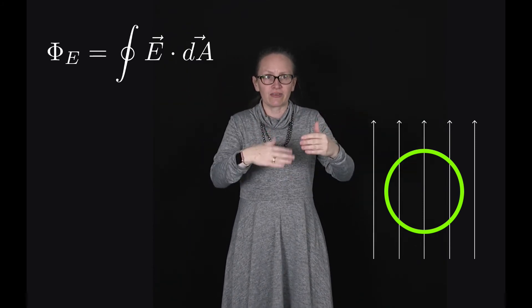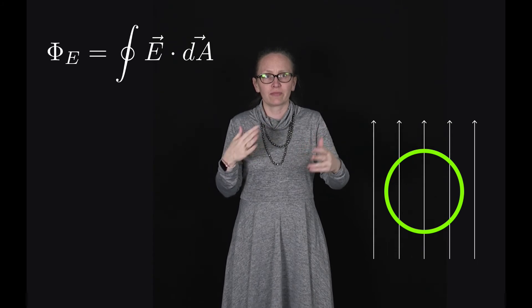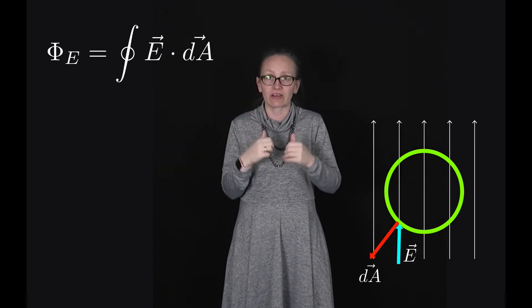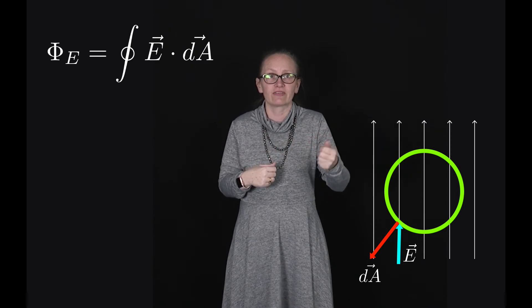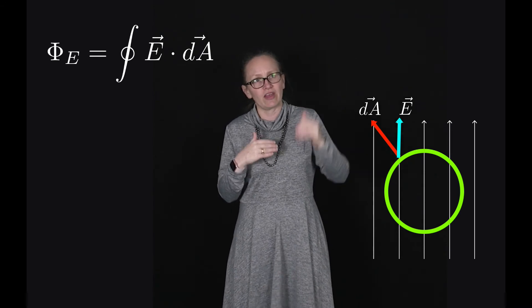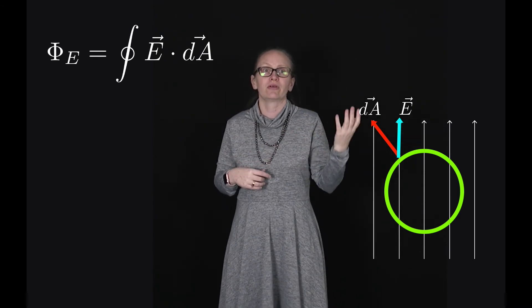When it's entering the sphere we've got a component of e and dA in opposite direction so they'll contribute negatively, whereas when it's leaving the sphere dA is also out of the sphere and so these will contribute positively.